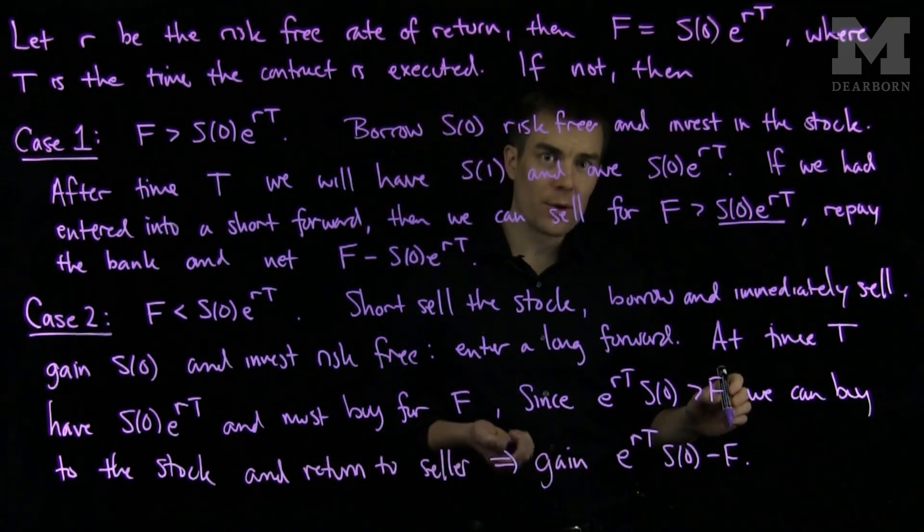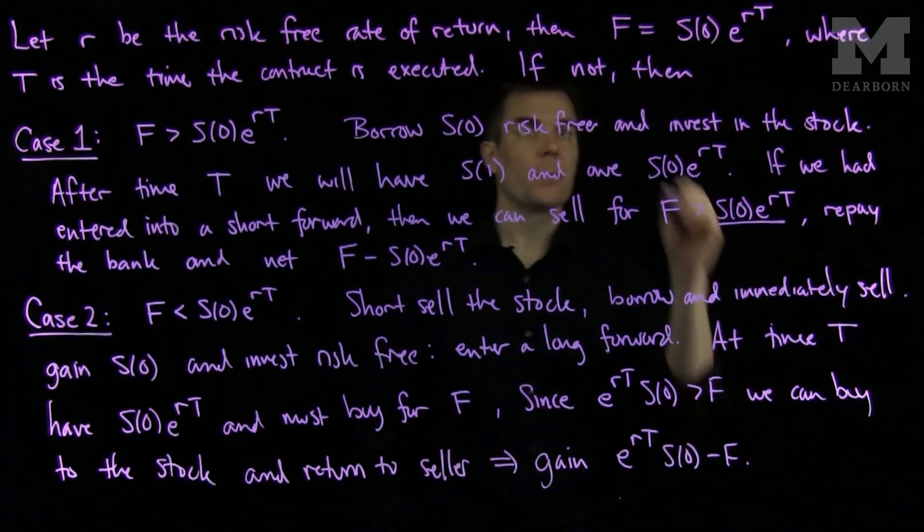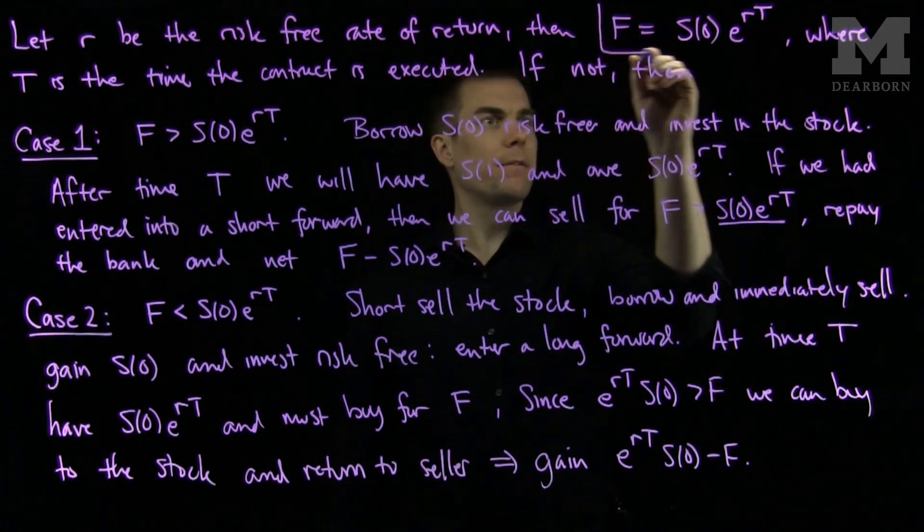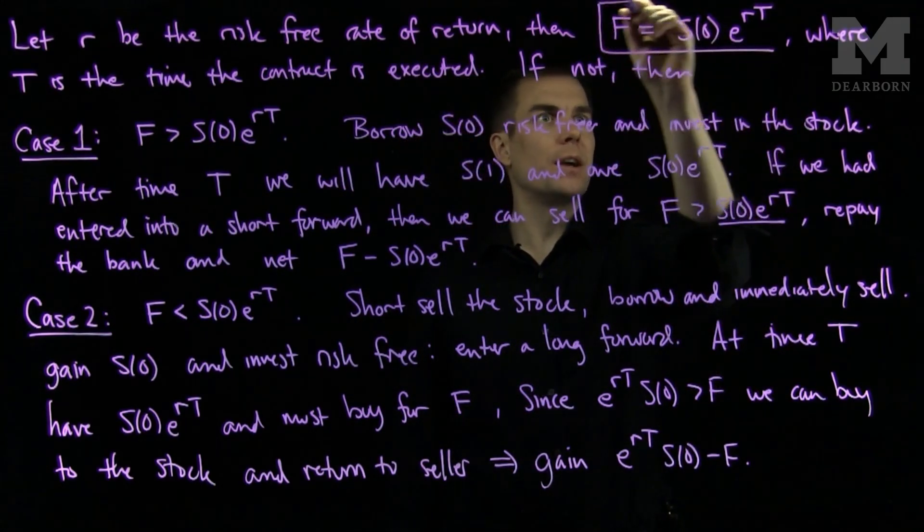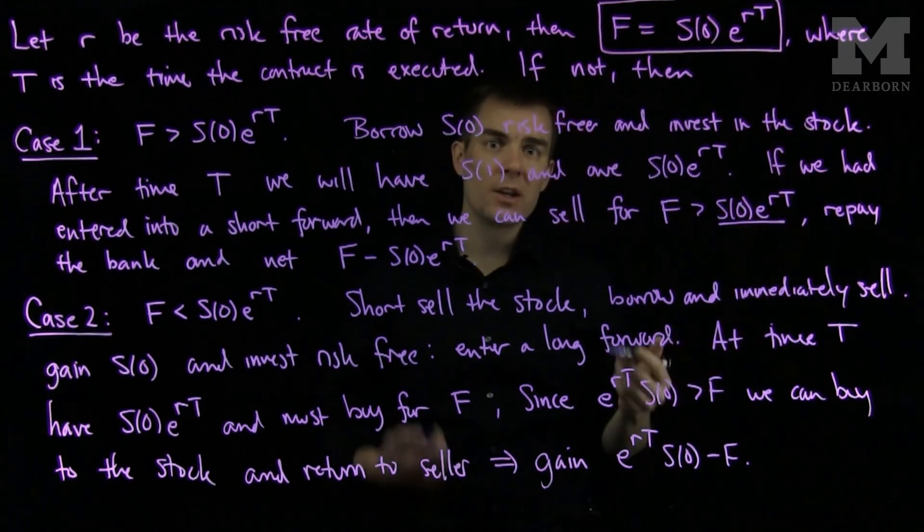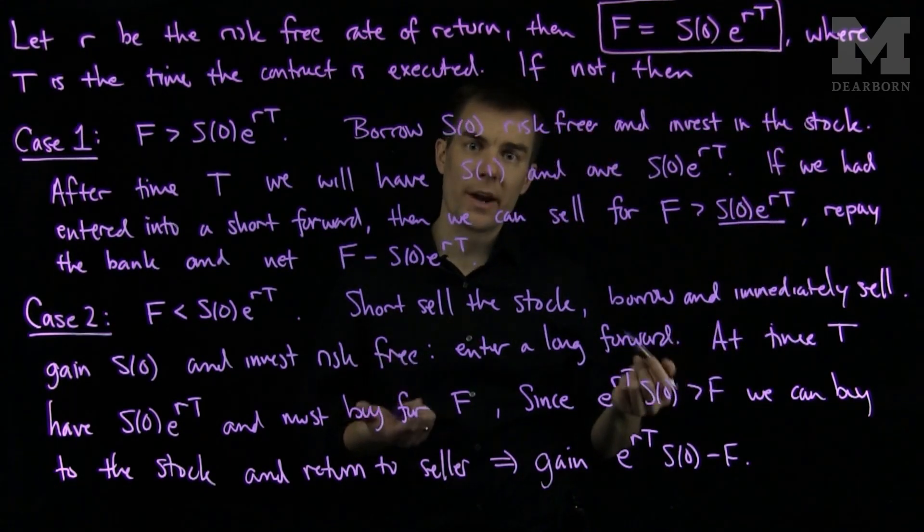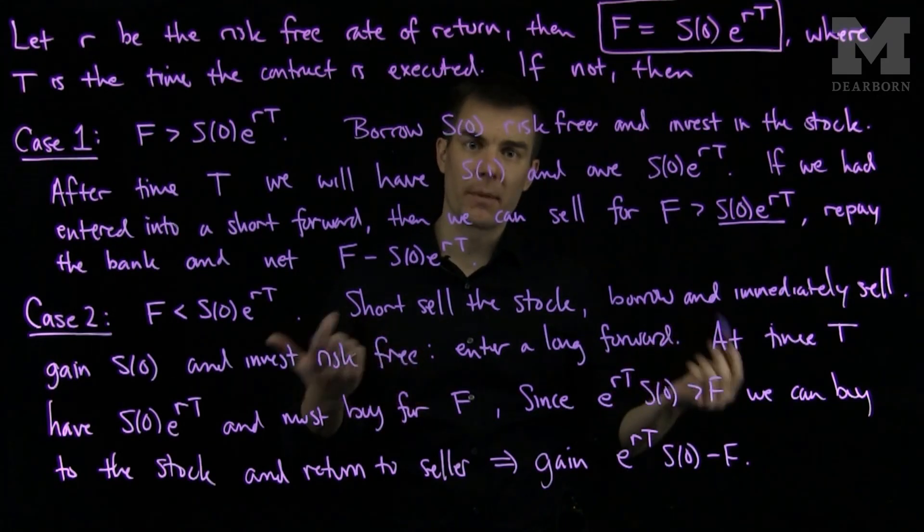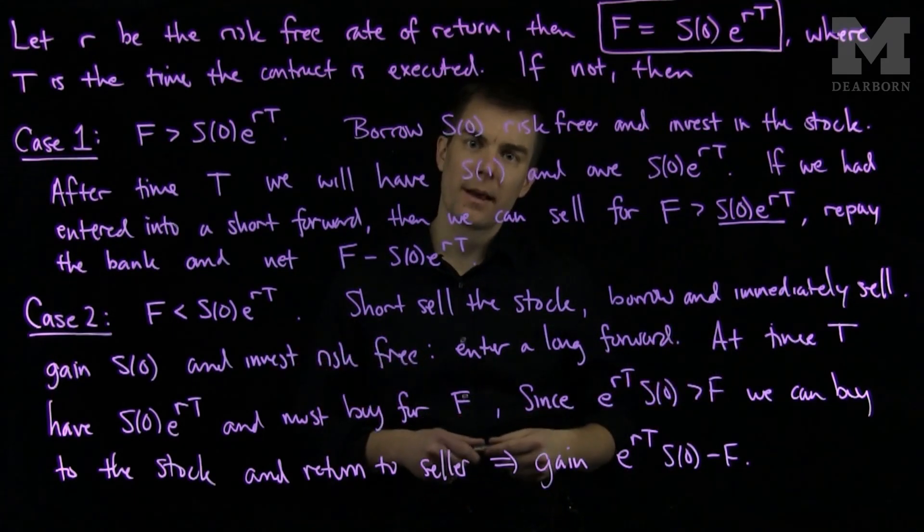So, the only possible value of F which is consistent with the arbitrage principle is F equals the initial stock price S0 times e to the RT, where R is the risk-free rate of return that you can get from a bank or from buying a bond. Thank you very much.